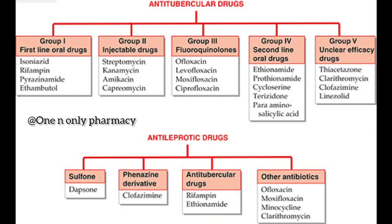Anti-leprotic drugs in short: sulfone derivative — Dapsone; phenazine derivative — Clofazimine (note the suffix '-azamine'); anti-tubercular drugs used as anti-leprotics — Rifampin and Ethionamide; other antibiotics — Ofloxacin, Moxifloxacin, Minocycline, and Clarithromycin. These are the two simple classifications of anti-tubercular and anti-leprotic drugs.